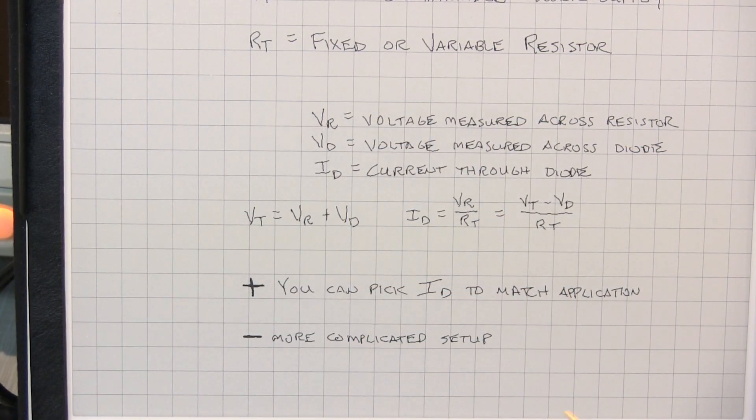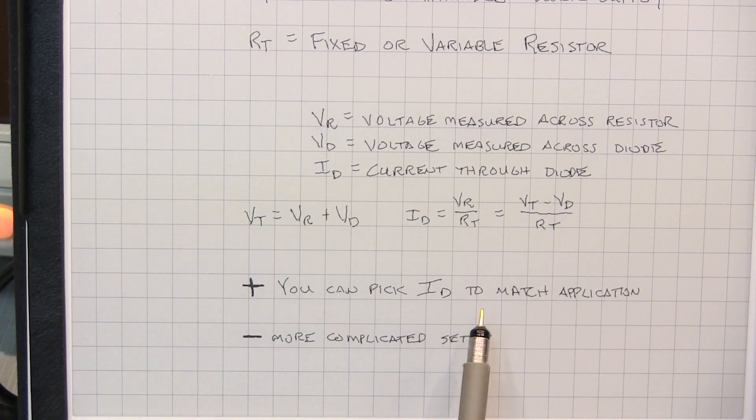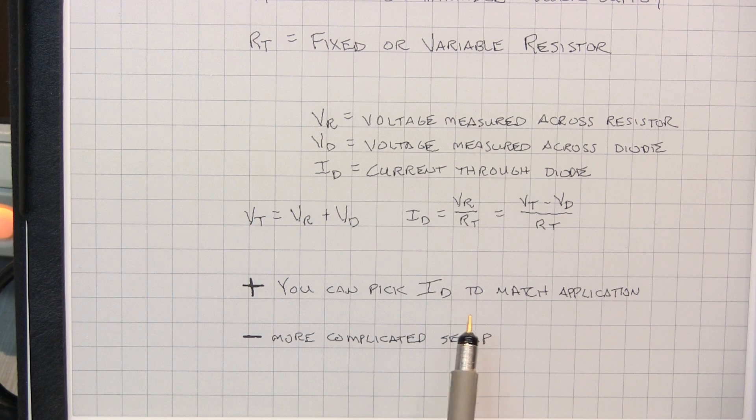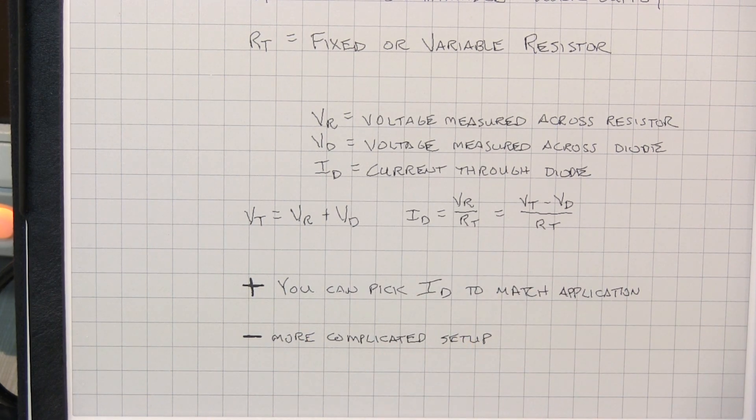So as we just saw, the advantage of this method is that you can pick the test current that you want so it matches your application. The downside is it's a bit more complicated to set up. So let's take a look at a way to alleviate a little bit of that.